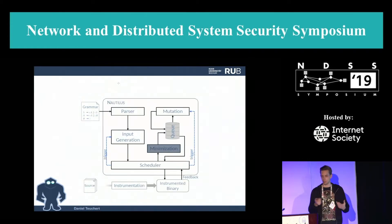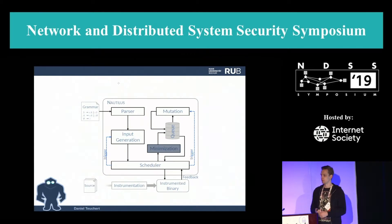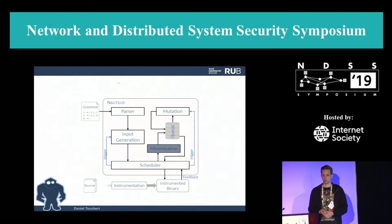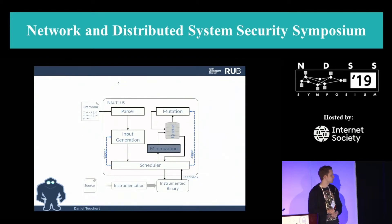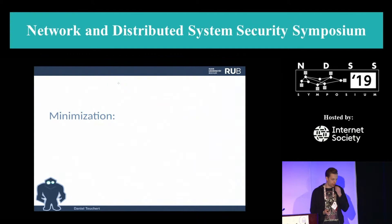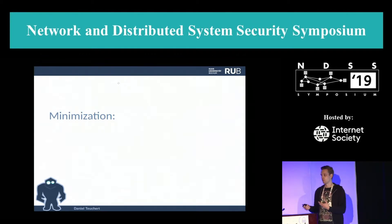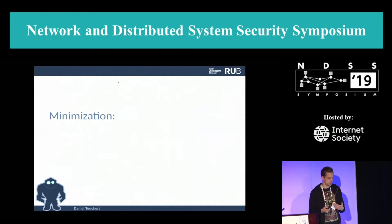Then we execute the generated input, and hopefully eventually find one that triggers new coverage. Once that happens, the first step is to minimize the input. Since we operate on the tree, we can minimize much more aggressively than AFL does.